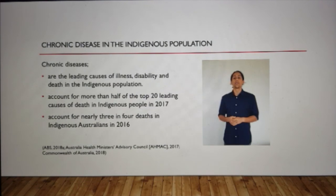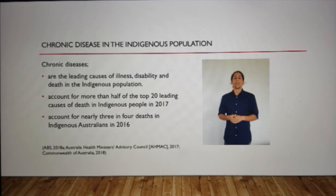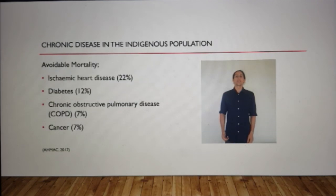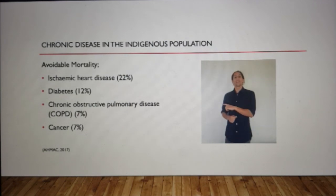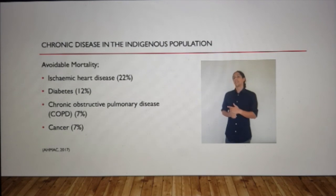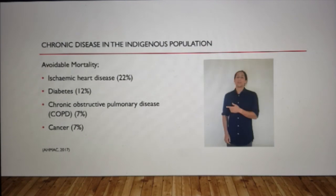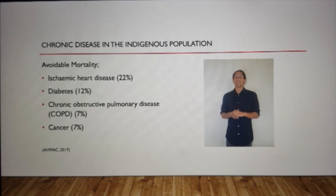Chronic diseases accounted for more than half of the top 20 leading causes of death in Indigenous people, and for nearly three in four deaths in Indigenous Australians in 2016. Among Indigenous Australians, the most common conditions causing avoidable mortality were ischemic heart disease at 22%, diabetes at 12%, chronic obstructive pulmonary disease at 7%, and cancer at 7%. To put it into perspective, suicide accounts for 11% and road traffic injuries at 7%.